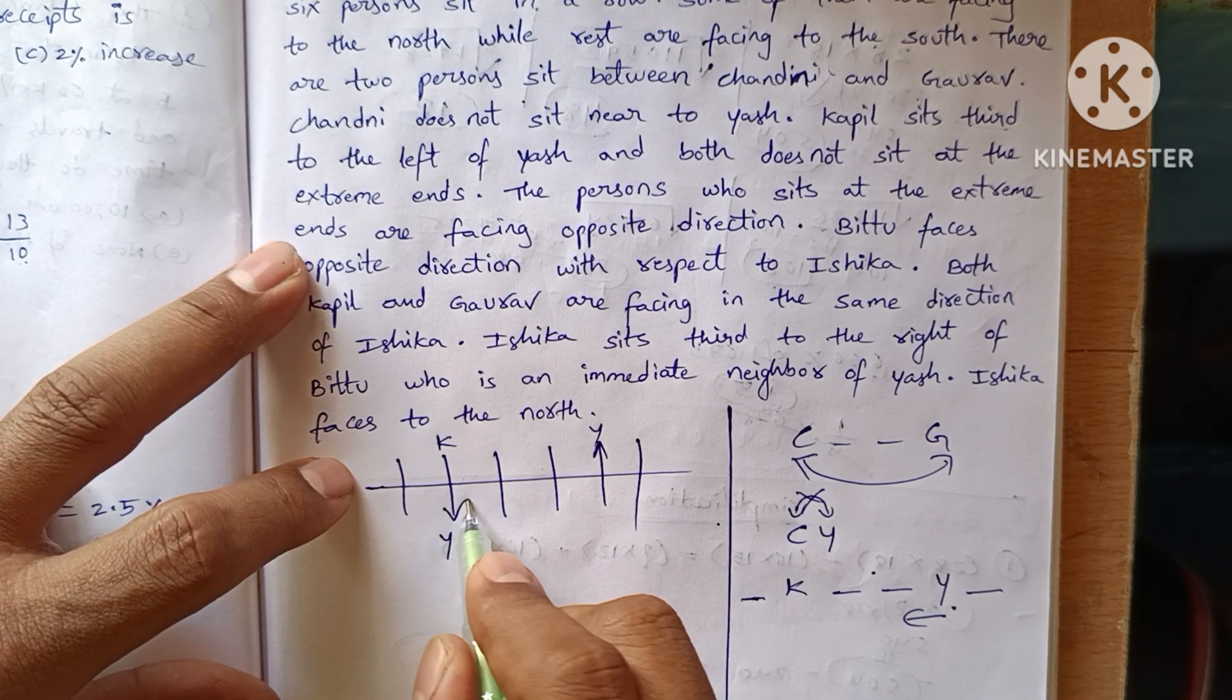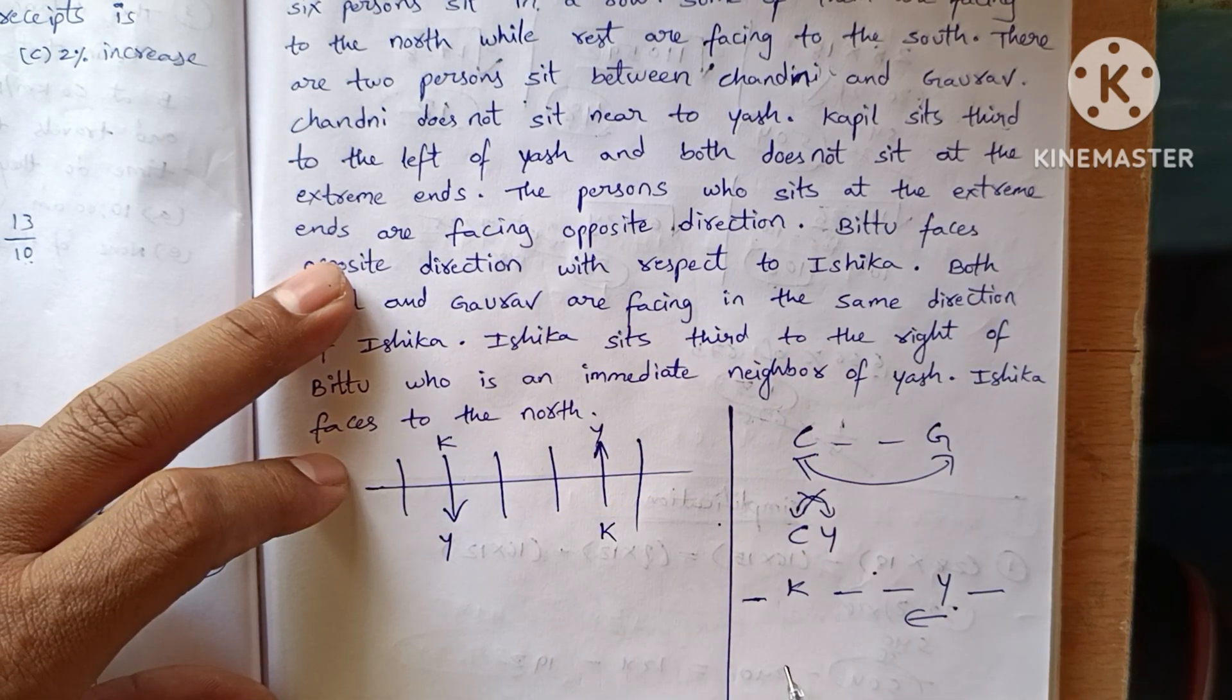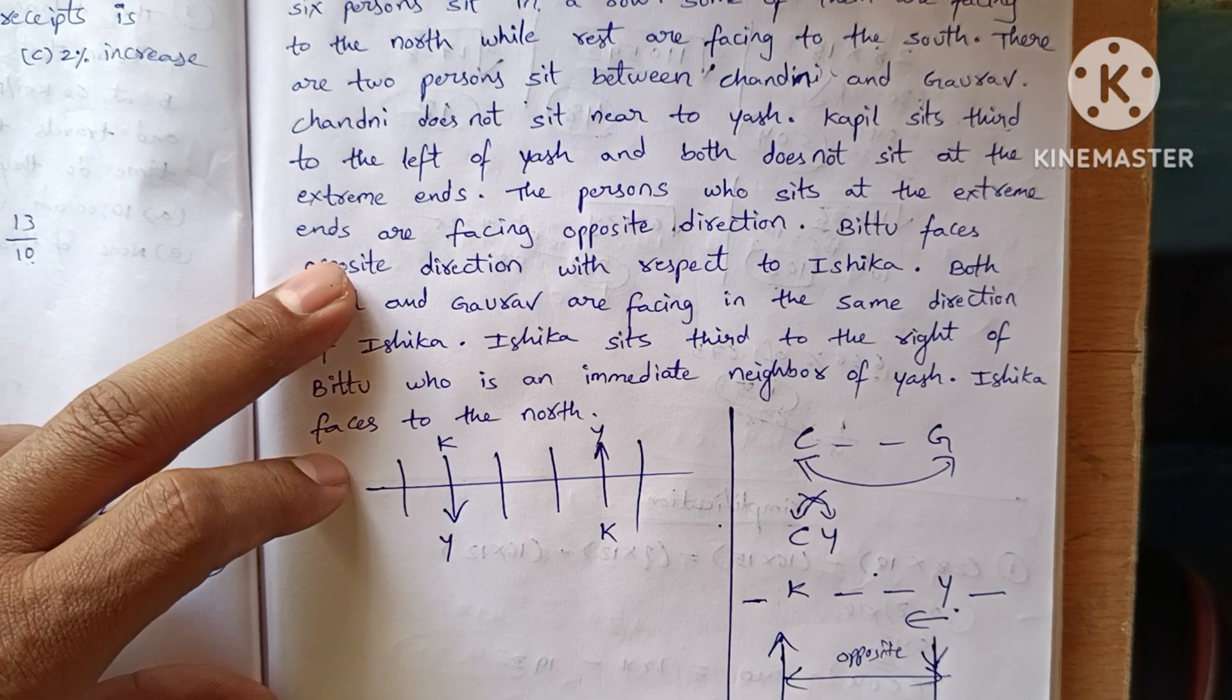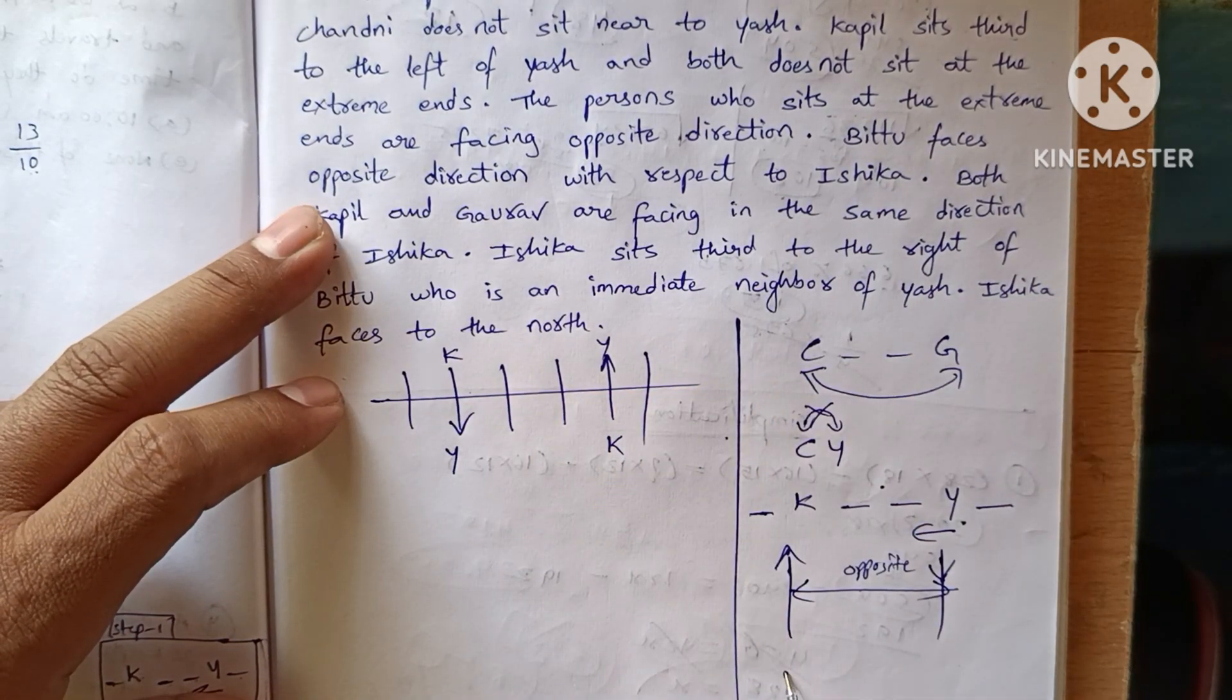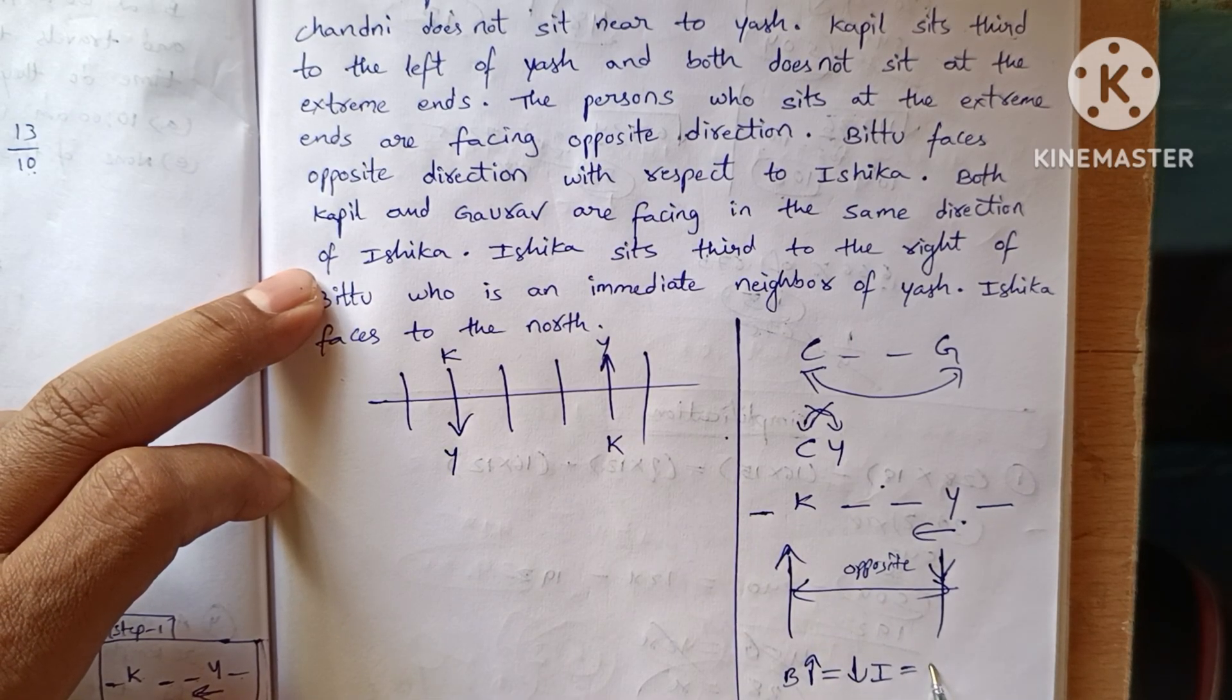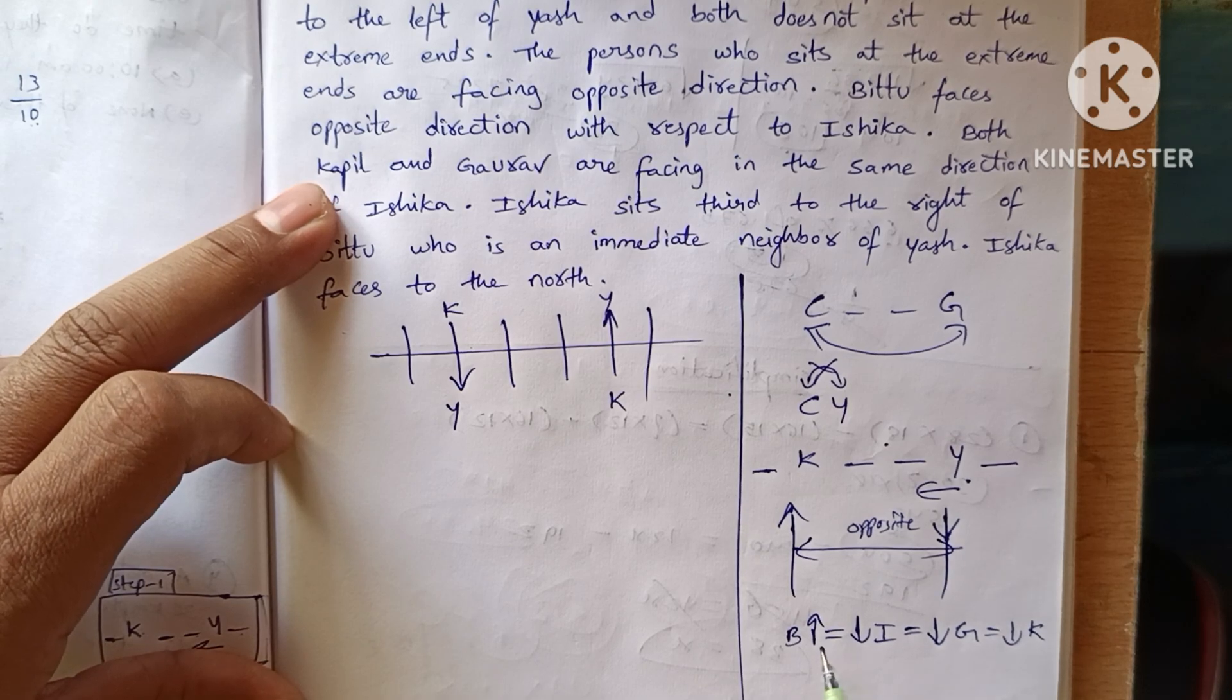The persons who sit at the extremes are facing opposite direction. B2 faces opposite direction with respect to Ishika. Both Kapil and Gauru are facing in the same direction as Ishika. So Ishika, Gauru and Kapil all face in the same direction.